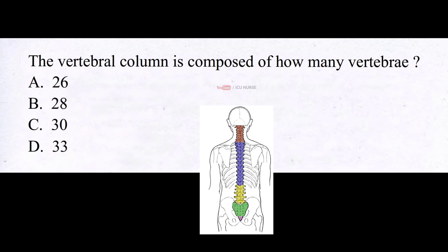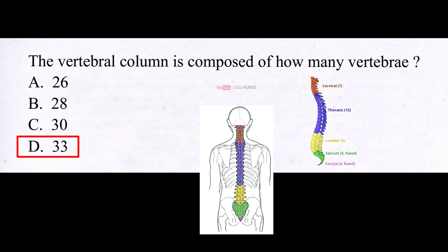The vertebral column is composed of how many vertebrae? In human beings, the vertebral column is composed of 33 vertebrae. This includes 7 cervical, 12 thoracic, 5 lumbar, 5 sacral, and 4 coccygeal.